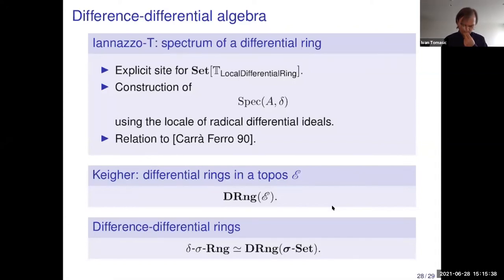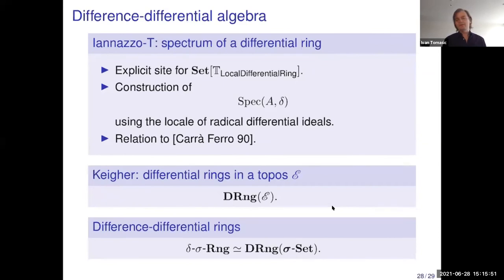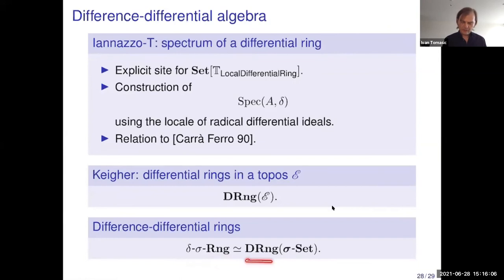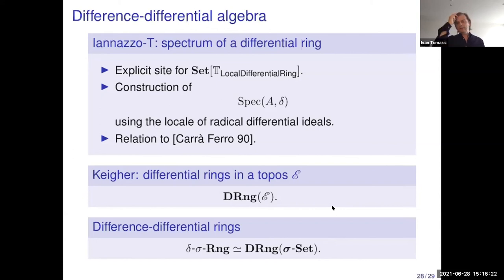What can we do about difference-differential algebra? Keigher showed that the theory of differential rings in an arbitrary topos is pretty well-behaved. So we view difference-differential rings as differential rings in the topos of difference sets. And of course we have the program to basically repeat everything said for the difference case, now in the difference-differential case.